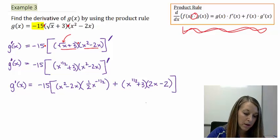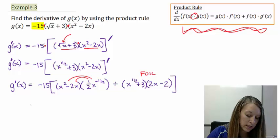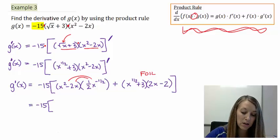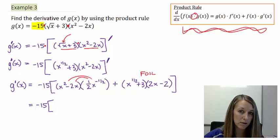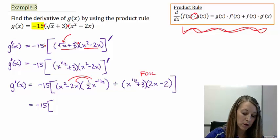All I have to do is simplify them. So by that, I need to distribute this through here, and I need to FOIL this over here on the right. Don't lose this negative 15 with the brackets, because that 15 goes through everything. That's my constant multiple rule. This is where most students make the most mistakes. It's not in the calculus part of this class, it's in the algebra part of this class.